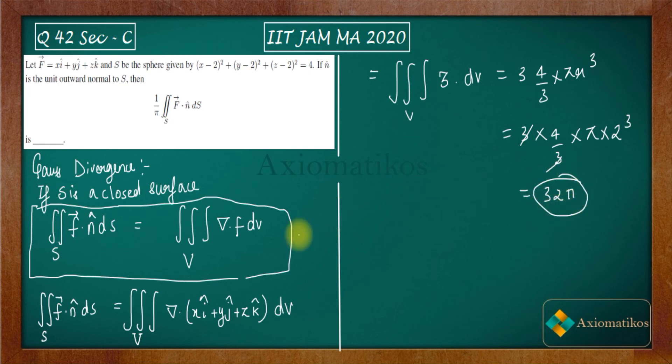So see how easy this question becomes after using Gauss divergence theorem. You just have to calculate the divergence of the given force field f. And using that, what I used is that we are getting triple integral of dV. Triple integral of dV means the volume of the sphere.